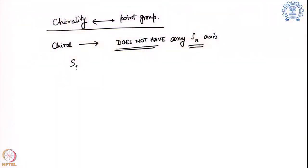If the molecule does not fit back on its original structure, that means you do not have an SN axis, and that means you are going to have a chiral molecule. This can be simplified: S1 means a sigma plane, so if you do not have a sigma plane there is a chance the molecule will be chiral. S2 is a center of symmetry, so there is also a chance of chirality if you do not have a center of symmetry.